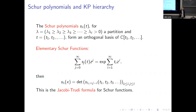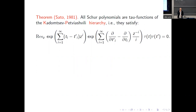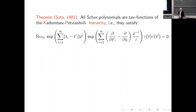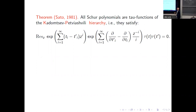There's this already quite old result by Sato. Could I just suggest — the Ti's are something like Ti equals X1 to the i plus X2 to the i, divided by i something — these are Miwa coordinates. So then you really get the symmetric functions. But I want to have the T's because they are related more to the KP hierarchy. So Sato showed that all these Schur functions are tau functions of the KP hierarchy.